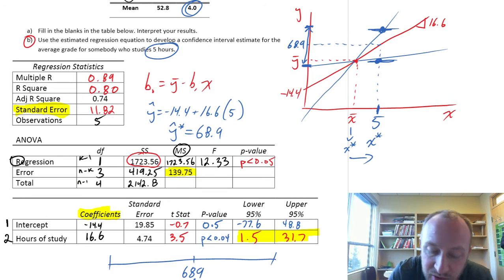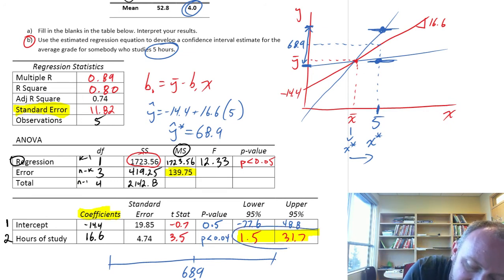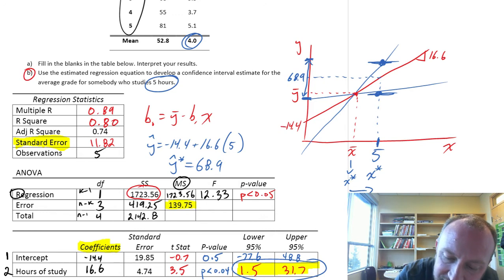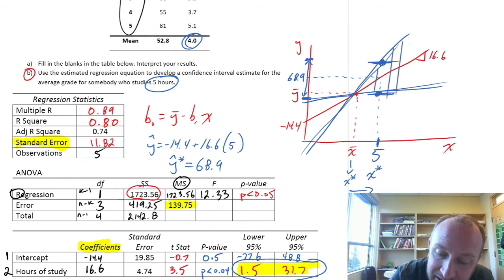the uncertainty in those coefficients, the uncertainty in those coefficients leads to a greater level of uncertainty in our estimates. As we move away from x bar,